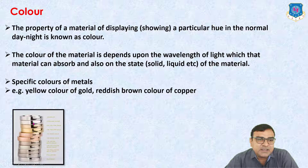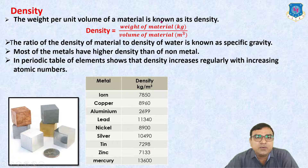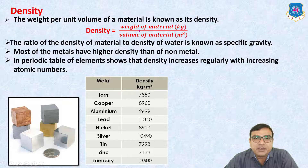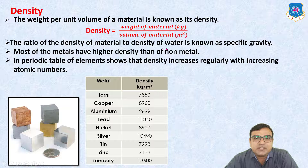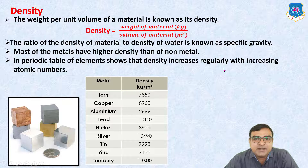An important property is density. The weight per unit volume of a material is known as density. The equation for density is: weight of material in kg divided by volume in cubic meters. The ratio of the density of a material to the density of water is known as specific gravity. Most metals have higher density than non-metals, and in the periodic table, density increases regularly with increasing atomic numbers.